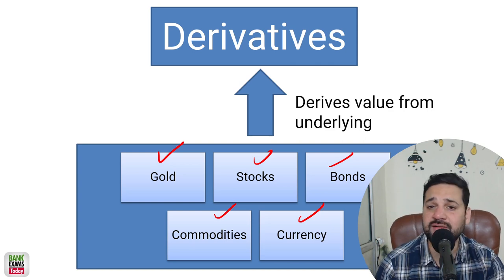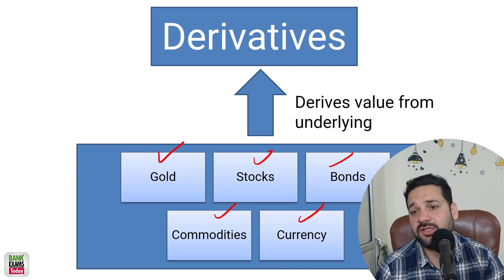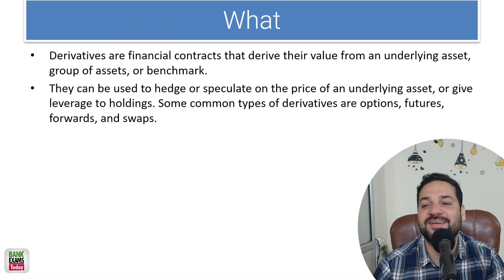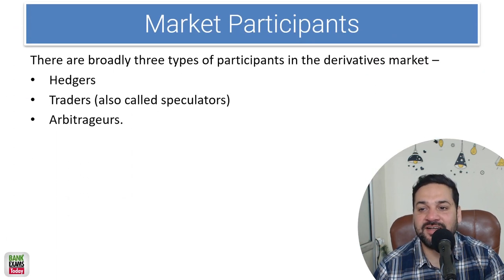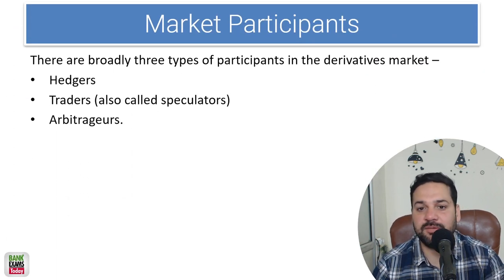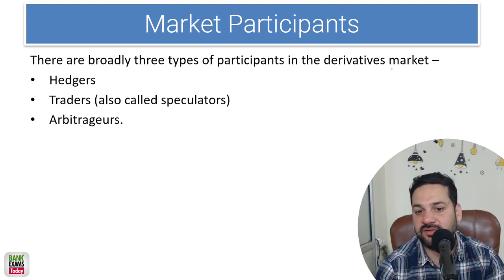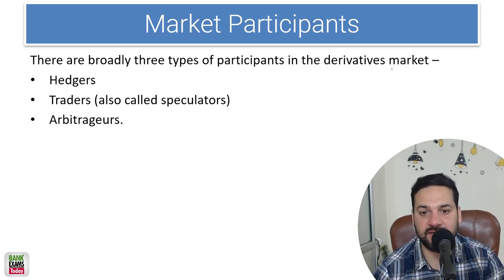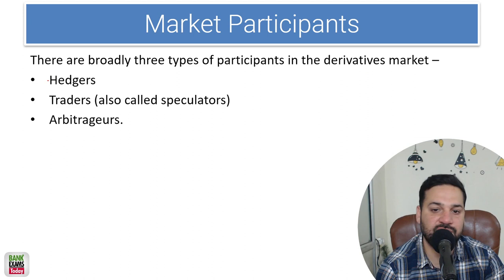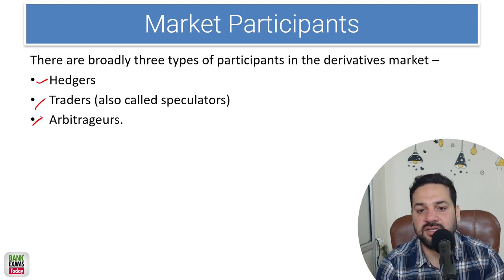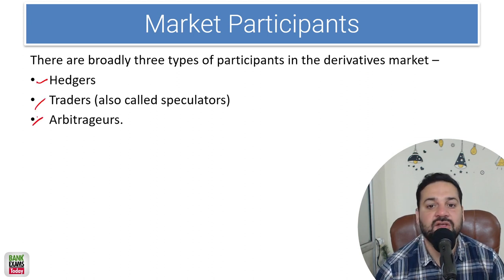So what is the purpose? That's also what we are going to discuss today. Before starting, there are broadly three types of participants in the derivative markets: the hedgers, the traders, and the arbitrators.